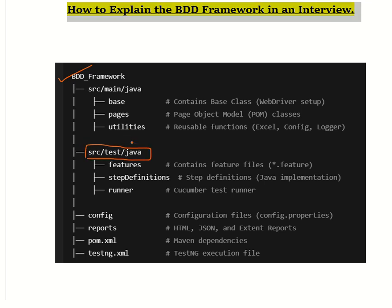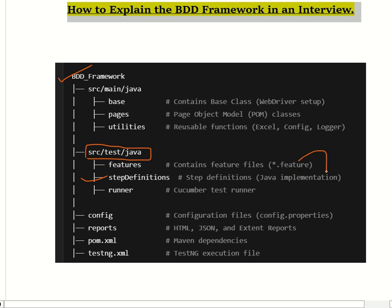In src/test/java, it contains the Java code for BDD tests. This is the main folder where all Java classes related to test execution are stored. The step definition folder contains Java classes that define the actual implementation of the test steps written in Gherkin format in the .feature file. Each step written in Given/When/Then format has a corresponding Java method in the step definition.